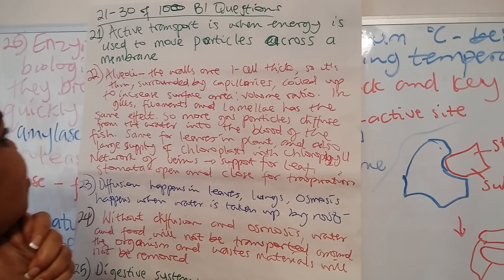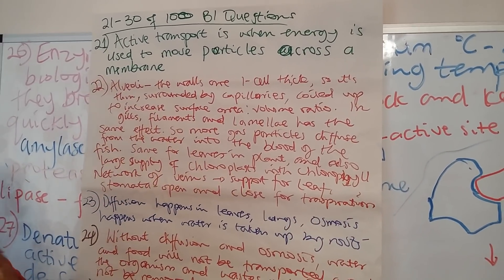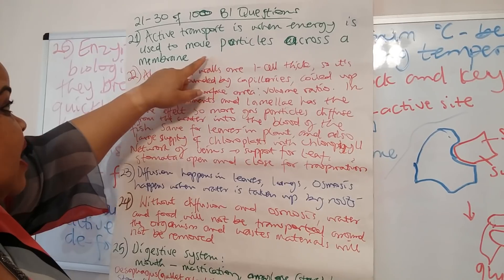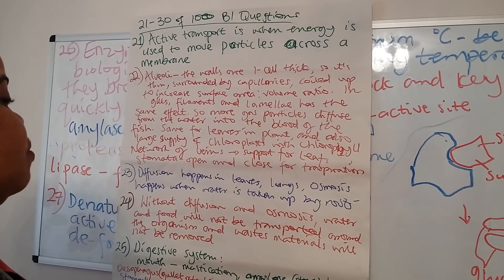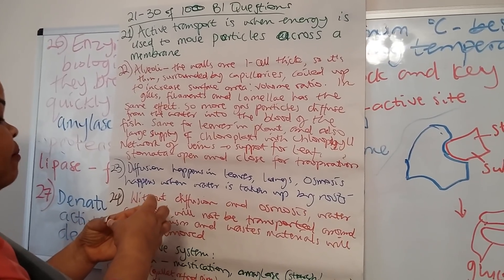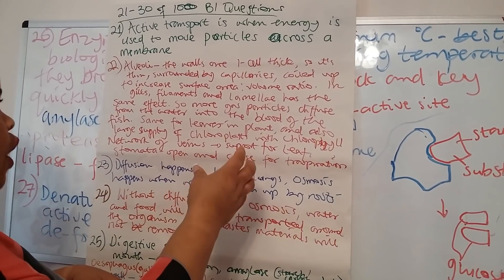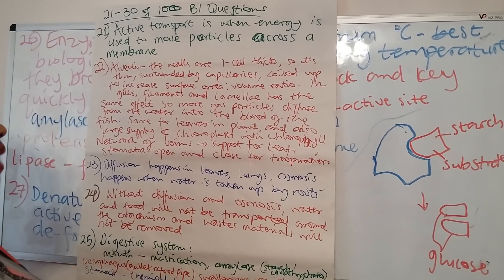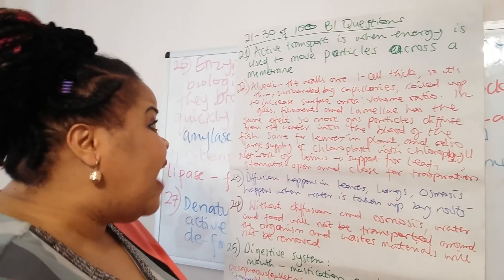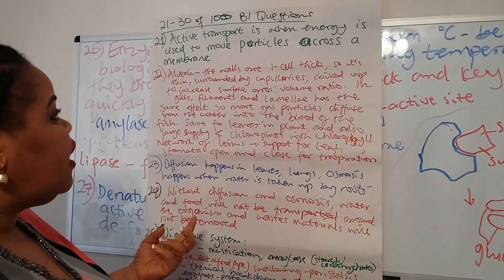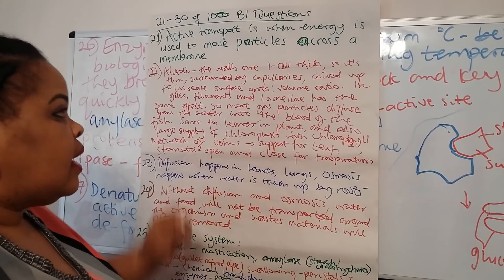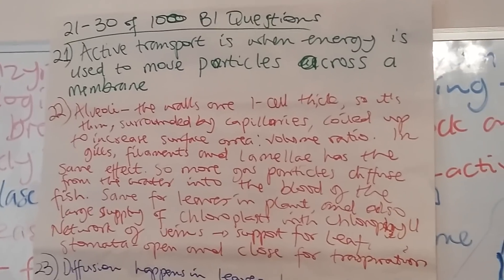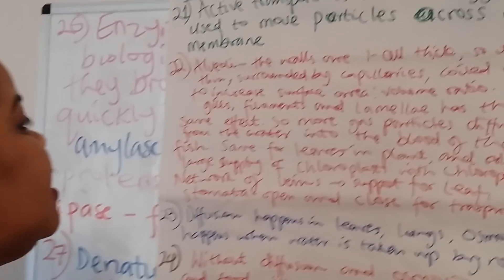Active transport is when energy is used to move particles across a membrane. In diffusion and osmosis, you move particles naturally along a concentration gradient, but in active transport you move particles from where you have less to where you have more — that is against the concentration gradient. Energy is applied to move those particles across. One example is how mineral ions are moved from the soil into the root.